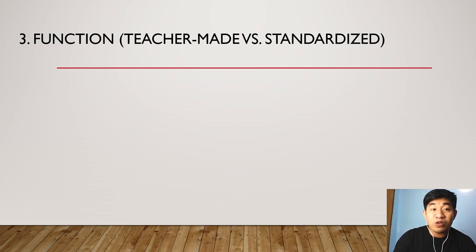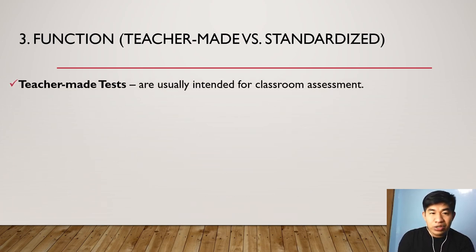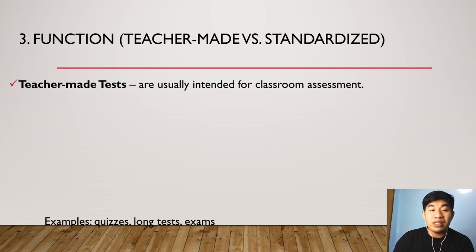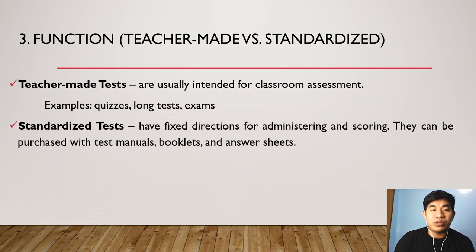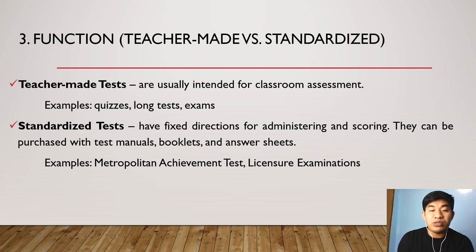The third classification of assessment is according to function. We have two types: the teacher-made test and the standardized test. Teacher-made tests are intended for classroom assessment — they are simply tests crafted or designed by teachers to assess students' learning. Examples include quizzes, long tests, and other exams. Standardized tests are types of tests that have fixed directions for administering and scoring. They can be purchased with test manuals, booklets, and answer sheets. Examples include the Metropolitan Achievement Test and licensure examinations for teachers and other professions.